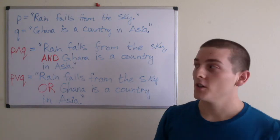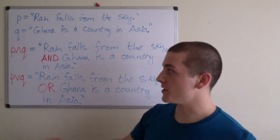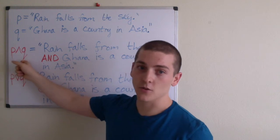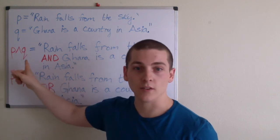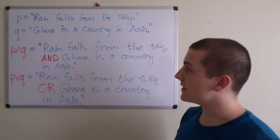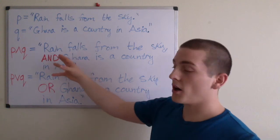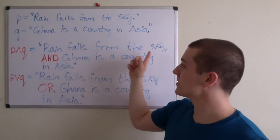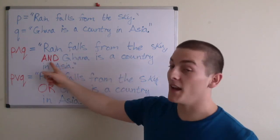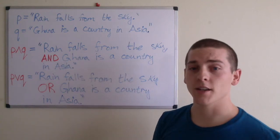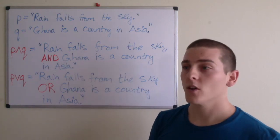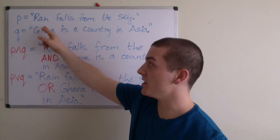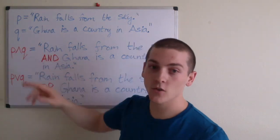The first one I want to introduce is the conjunction — that is P and Q. This composite proposition here is 'rain falls from the sky and Ghana is a country in Asia.' The two sub-propositions in this would be P and Q.